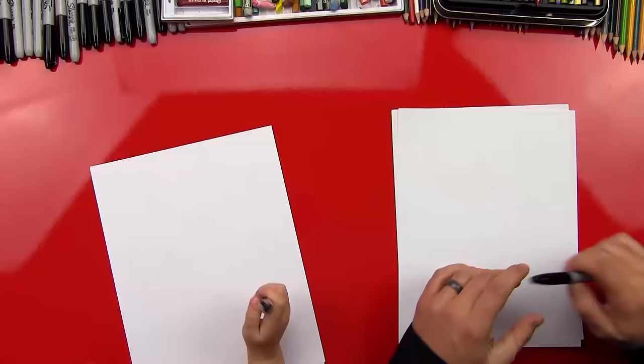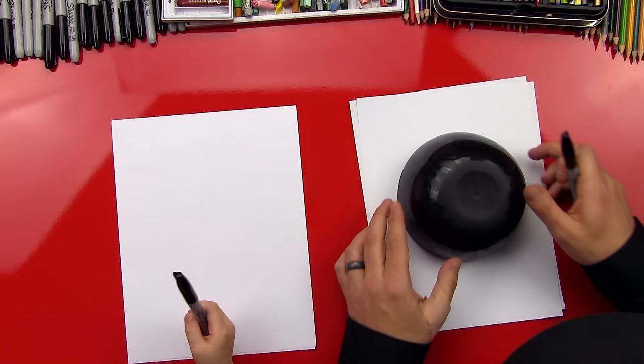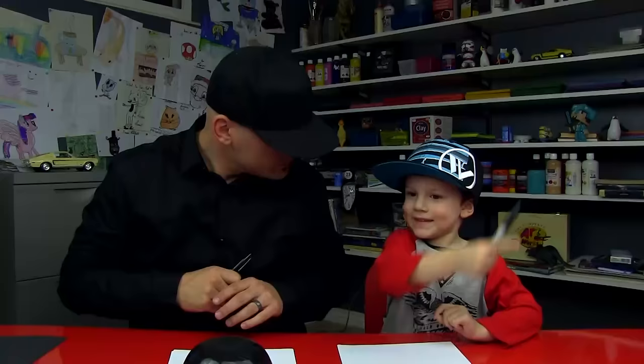You ready to start? All right, let's do it. So we have our white paper, right? And we also got this, what is this? A ball. What shape is it? A circle. Yeah, you're right, it totally is a circle. And what shape is the Earth? It's a circle. Yes, it is! Give me five.